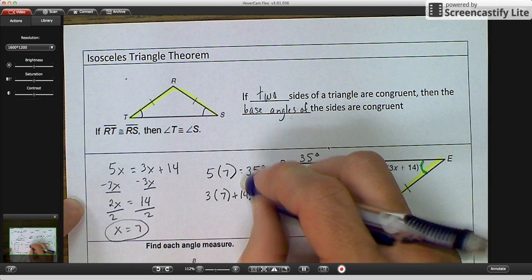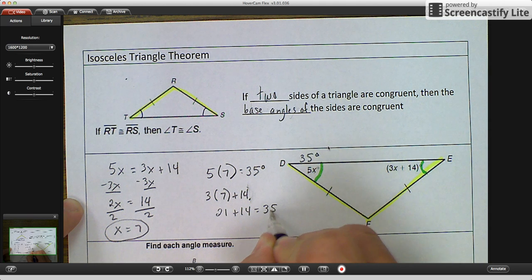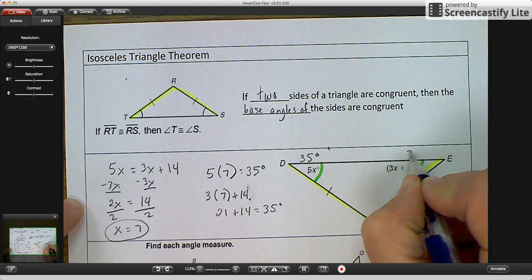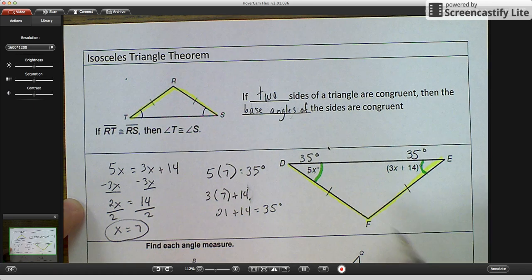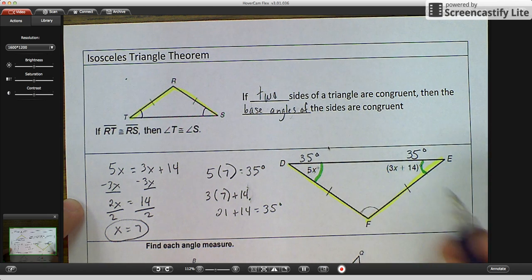So if I go 3 times 7 and add 14, 3 times 7 is 21 plus 14 would be 35 degrees again. So the base angles here are 35 degrees. If we needed to figure out this angle, we would go 180 minus the sum of 35 plus 35.